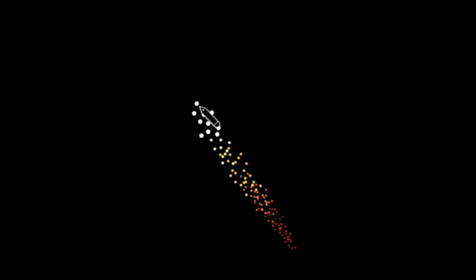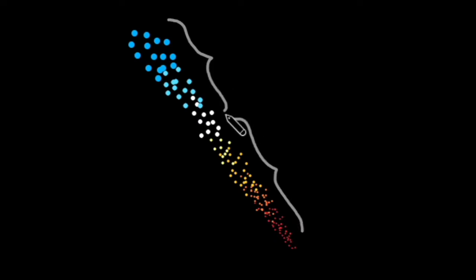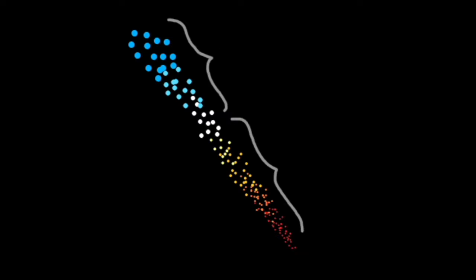Both the PP and CNO cycles are methods of fusing hydrogen into helium. The proton-proton PP chain reaction is applicable to low and medium mass stars, including our sun. Because most stars are low mass stars, the PP reaction is the most popular method of fusing hydrogen into helium.